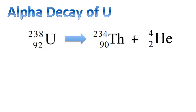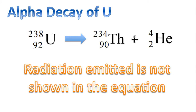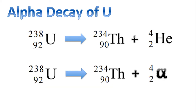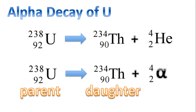We can use an equation to represent this. Radiation that is emitted is not usually shown in the equation. This equation can also be represented with the alpha symbol instead of the helium symbol. Two terms you may come across: uranium-238 is called the parent nucleus, and thorium-234 is referred to as the daughter nucleus.